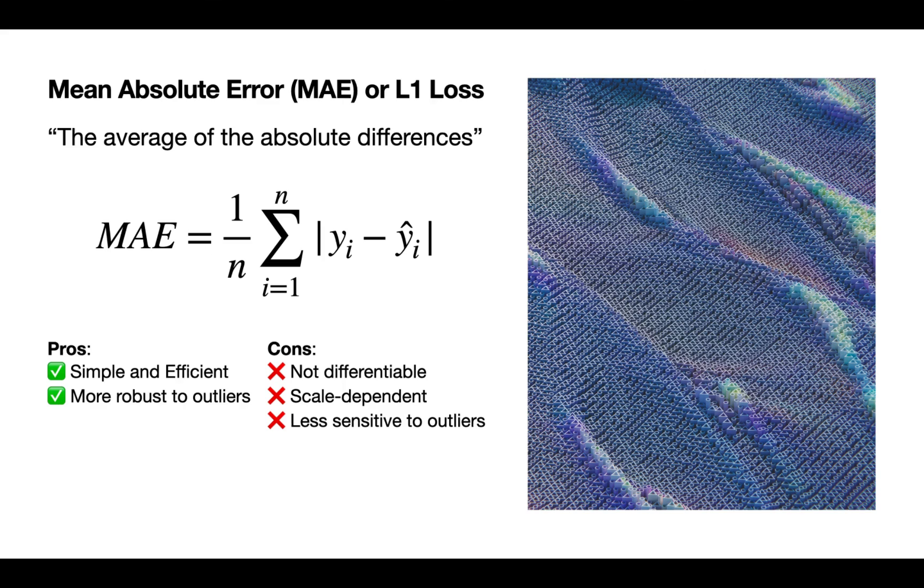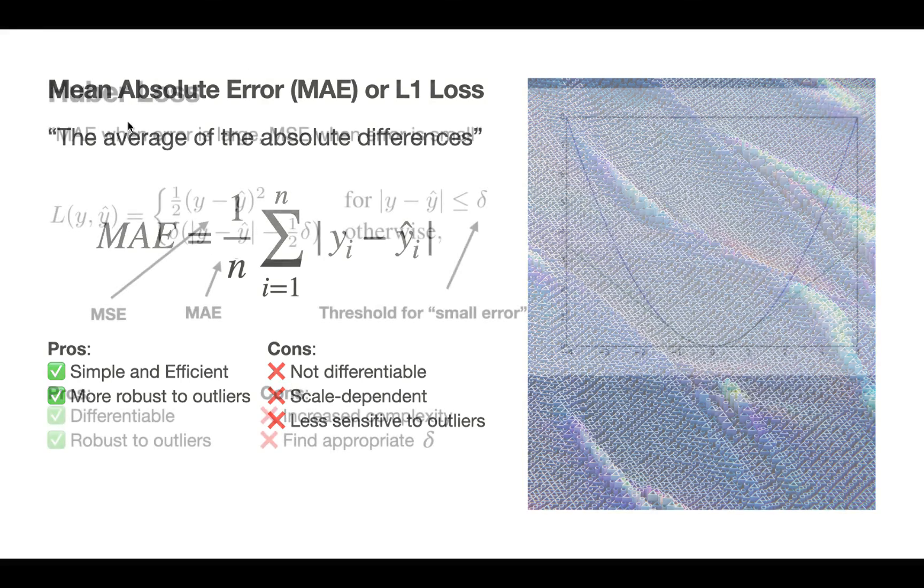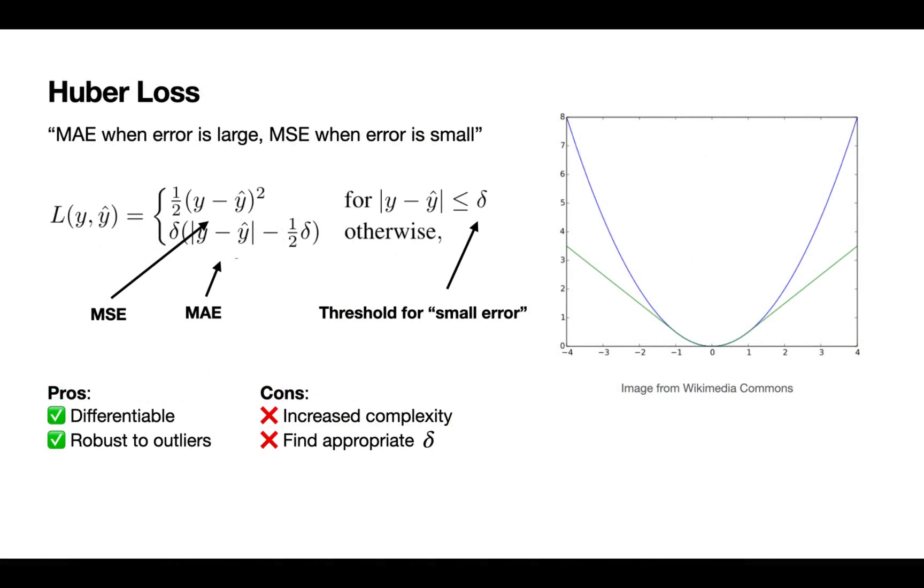However, if you take an absolute difference, it's not going to be differentiable at all points because you have this little edge at zero. The Huber loss is saying, I want a little bit of both then. I want it to be working with the square differences very close to the predictions, but then as I'm going further away, we can use the absolute error instead.